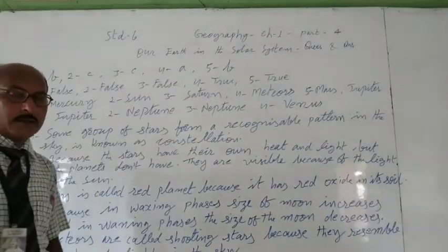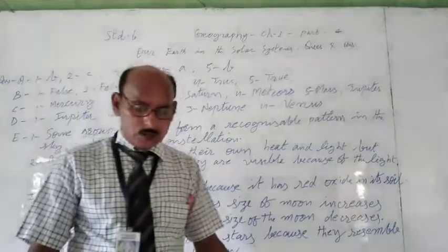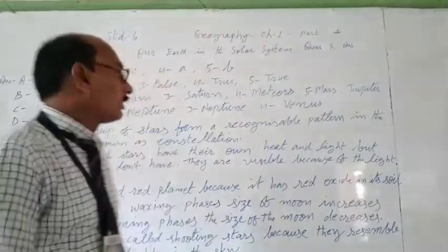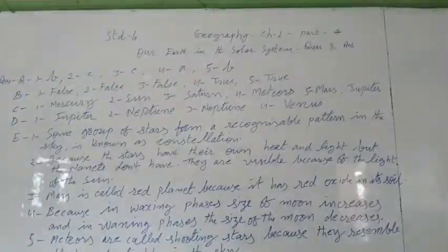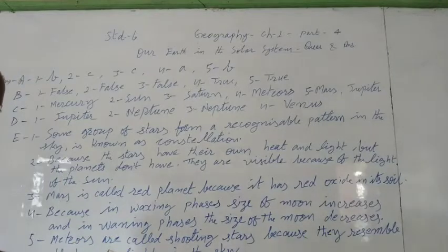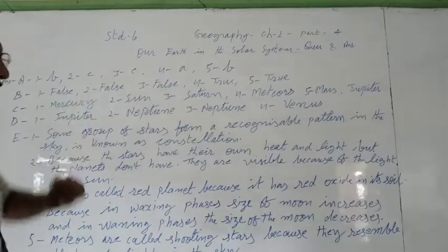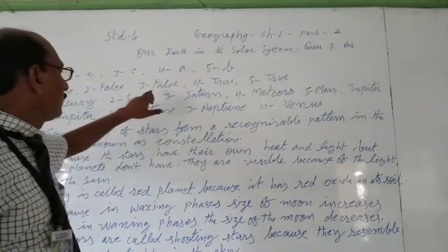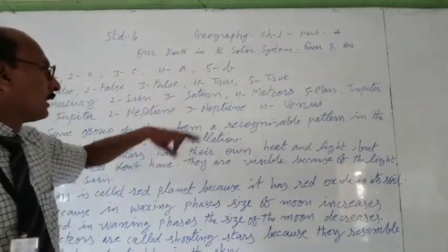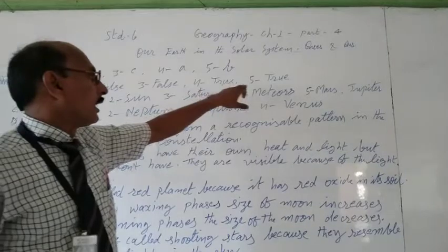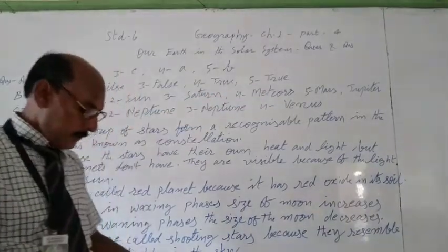Again B is talking about true and false. So the first question is false, the second question also false, the third question also false, and the fourth one is true, and the fifth one is also true.